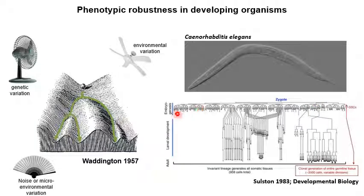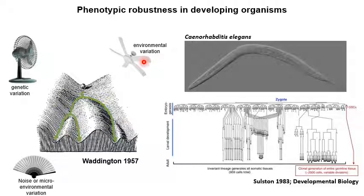The development of organisms is marked by the production of consistent phenotypes in a population of animals. And often these consistent phenotypes are produced in the face of internal and external noise. Internal and external noise comes from a number of factors, including genetic variation, external environmental variation, and microenvironment or noisy environmental variation.